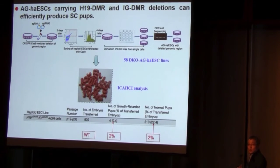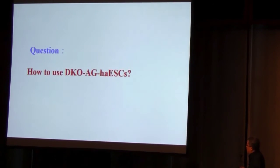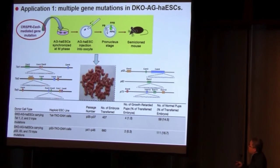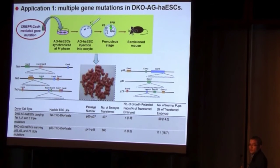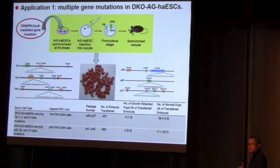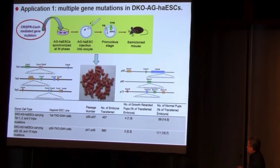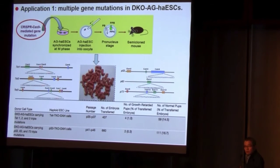So what can we do using these haploid cells for genetic analysis? First, we can perform multiple gene mutations in our haploid cells. We mutated TET family genes — TET1, TET2, and TET3 — in our haploid cells. By injection of these haploid cells into oocytes we can efficiently produce heterozygous mice carrying TET1/2/3 mutations. Similarly, we also mutated p53 family genes in our haploid cells and produced heterozygous mutant mice in one step at very high efficiency.